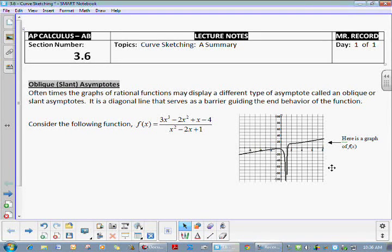But this guy is just a little bit different. And it says oftentimes the graph of rational functions may display a different type of asymptote called oblique or slant. You can think of that as diagonal. It's a diagonal line that serves as a barrier guiding the end behavior of the function. And if you consider this particular function, f of x, I've given you a sketch of the graph over to the right, which might give you a little bit of insight into where this oblique asymptote would occur. But I'm going to show you algebraically how to find it. And we'll even graph it on the TI-Inspire to get a little bit better look at it.